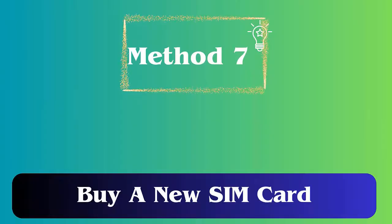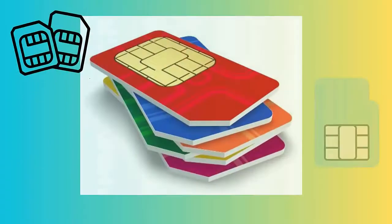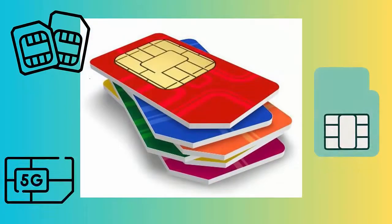Method seven: buy a new SIM card. When you continuously get the same SIM not provisioned MM2 error on Android, you should change the SIM. Simply go to your nearest shop and buy a new SIM card. Hopefully, this trick will resolve the issue.